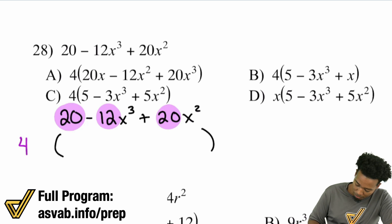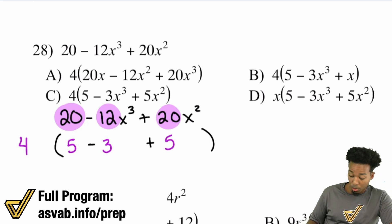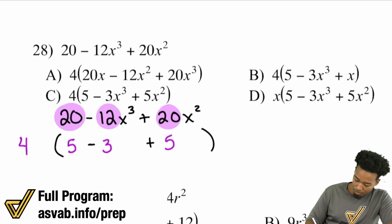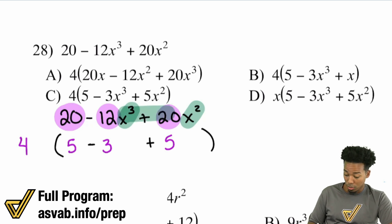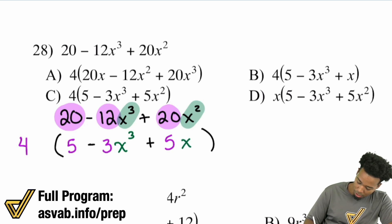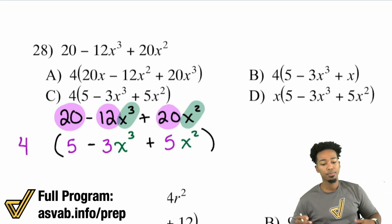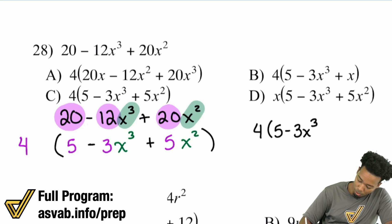What's left? Well, 20 divided by 4 is 5. Then I'm going to keep that negative there. 12 divided by 4 is 3. Keep that plus there. 20 divided by 4 is 5. Now let's go ahead and worry about those variables. We don't have a variable here. We have x cubed and we have x squared. They don't share any x's — well, these two do, but you need all three for it to be the greatest common factor of all three terms. So with that, you leave the x cubed where they are — nothing changes. Leave that x squared where it is. And there's your answer: 4 multiplied by 5 minus 3x cubed plus 5x squared.